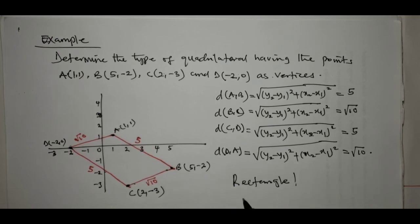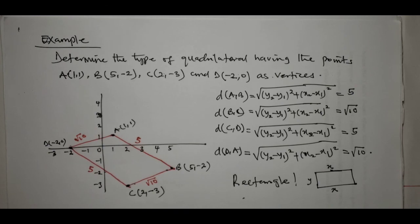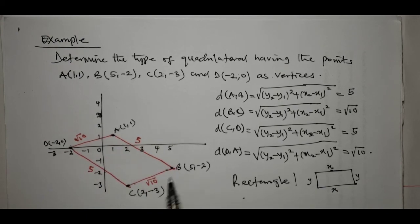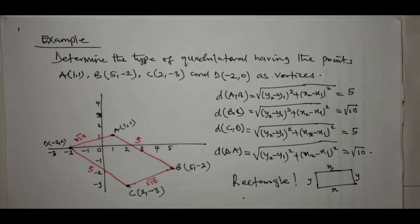The question is: what type of quadrilateral has its opposite sides equal? The answer is a rectangle. A rectangle is a figure that has two pairs of opposite sides equal — if one pair is length X the opposite side is also X, and if the other pair is Y the opposite side is also Y. Here DA and CB are opposite with value root 10, and AB and DC are opposite with value 5. Therefore we conclude that this quadrilateral is a rectangle. In our next class we shall be discussing lines, beginning with the ratio of division of a line segment. If you liked this video, please click the like button and subscribe to my channel. Thank you.